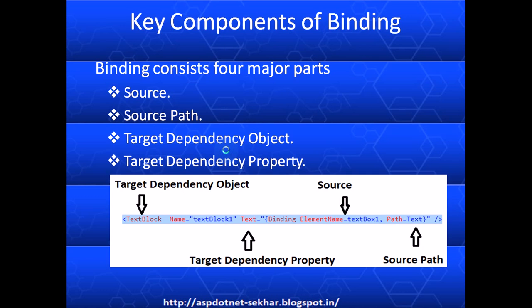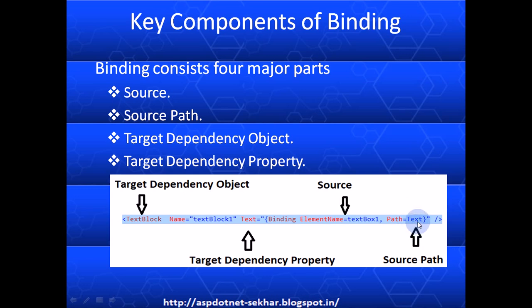So binding consists of four parts: source, source path, target dependency, and target property. In this example, TextBlock is a UI element which is bound to another UI element called TextBox1. Here, TextBox1 is the source and its Text property is the source path. And this text is bound to the Text property of TextBlock. So the target dependency object is TextBlock and the target dependency property is the Text property of TextBlock.